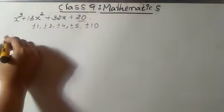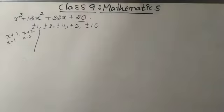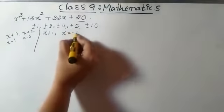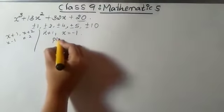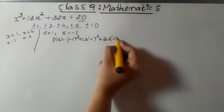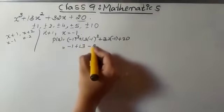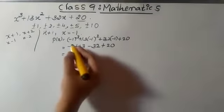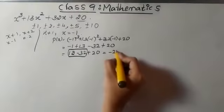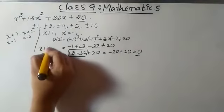I will go with x plus 1 first. If x plus 1 is a factor, then x equals minus 1. Substituting x equals minus 1 into P(x): minus 1 cubed plus 13 times minus 1 squared plus 32 times minus 1 plus 20 gives minus 1 plus 13 minus 32 plus 20, which equals 12 minus 32 plus 20 equals 0. So x plus 1 is a factor.